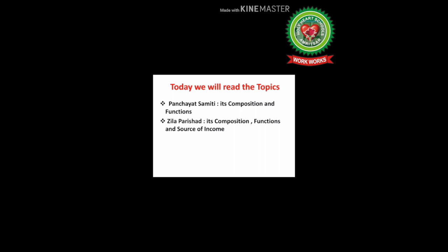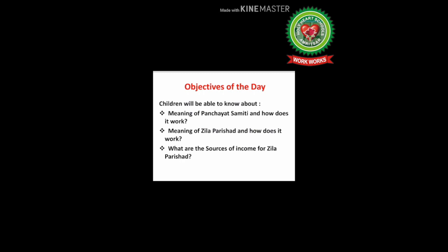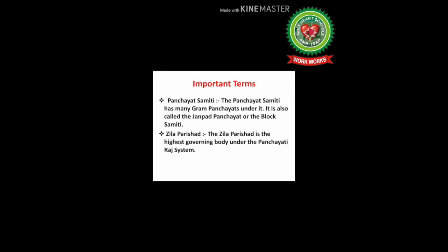Now children, have a look at the topics we will read in today's class. The topics are: Panchayat Samithi — its composition and functions, and Jila Parishad — its composition, functions, and sources of income. By the end of today's class you will be able to know the meaning of Panchayat Samithi, how it works, the meaning of Jila Parishad, how it works, and the sources of income for Jila Parishad.